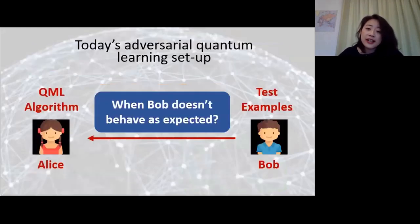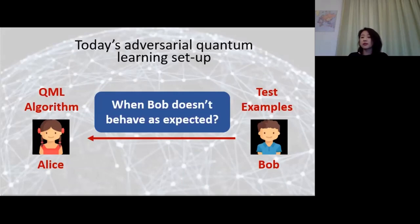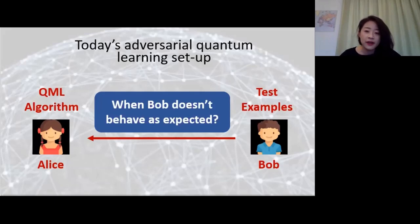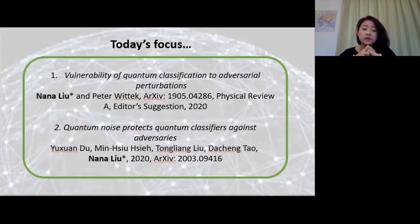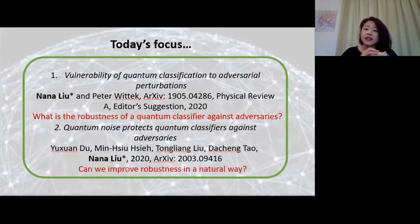For today's adversarial learning setup, we have the simplest type of network—just two parties, Alice and Bob. For the adversarial example setting, Alice is the one performing the algorithm, perhaps having access to a quantum device performing classification. Bob is the one sending Alice test examples—new pictures that he wants Alice to classify. The problem is what happens when Bob doesn't behave as expected, or there is some evil Eve who comes in and adversarially perturbs Bob's example.